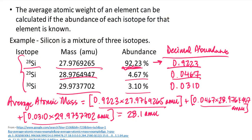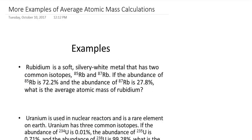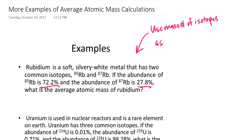Another scenario is when you don't have the actual masses of the isotopes. For rubidium, for example, we're given the percent abundances but not the exact isotope masses. In that case, we can use the mass number of each isotope as an approximation for the mass of the isotope, and still carry out the same mathematical process.